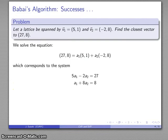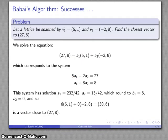I'll solve my equation as a linear combination of these two vectors. That gives me a system of two variables and two unknowns. I'll solve it. A₁ is 232/42, A₂ is 13/42. What I'm going to do is round these to the nearest integer. B₁ is 6, B₂ is 0. So 6(5,1) + 0(-2,8) = (30,6) is a vector that is close to (27,8).